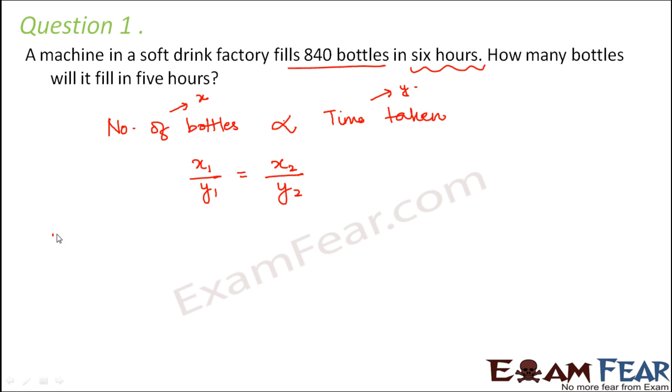Now in this question, x1 that is the number of bottles at one instant is given as 840. So x1 is 840 and to fill 840 bottles, how much time is taken? That is the corresponding value of y, y1 is 6 hours. Similarly, what is the value of x2? Well x2 we do not know, we need to find out the number of bottles. So this is not known and what is y2? y2 is 5 hours.